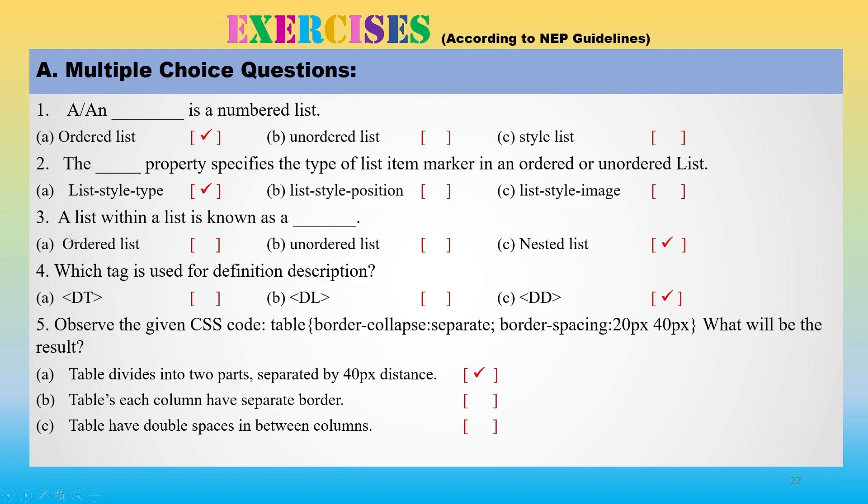A list within a list is known as nested list. Which tag is used for definition description? DD, definition description.